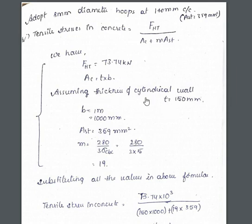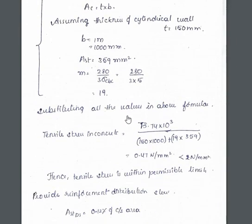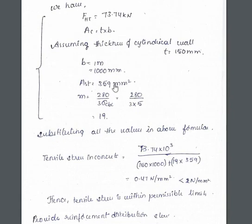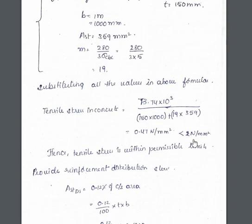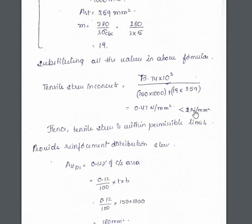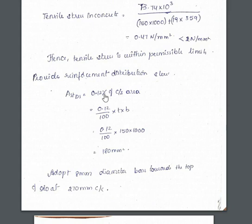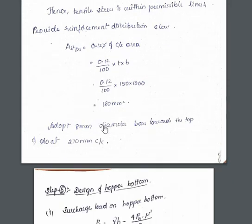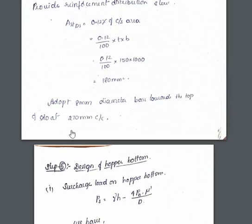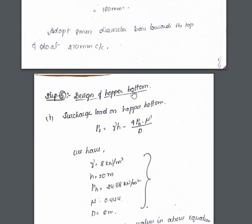Assume thickness of cylindrical wall between 100 to 250 mm; here take 150 mm. Substituting all values with b = 1 meter, the tensile stress is within the permissible limit of 2 Newton per mm square. For distribution (vertical) reinforcement, A_stds = 0.12% of the cross-sectional area, giving 180 mm square. Adopt 8 mm diameter bars provided vertically towards the top of the silo.